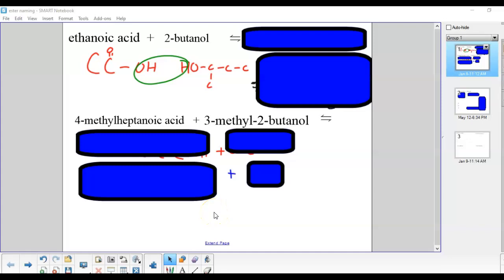Let's take a look at some more examples of naming esters. Here I have ethanoic acid (that's two carbons) plus two-butanol. But means there's four carbons in the longest chain, and the two indicates that the hydroxyl group is coming off of carbon number two in that chain. So if we look at it, it's one, two, three, four.